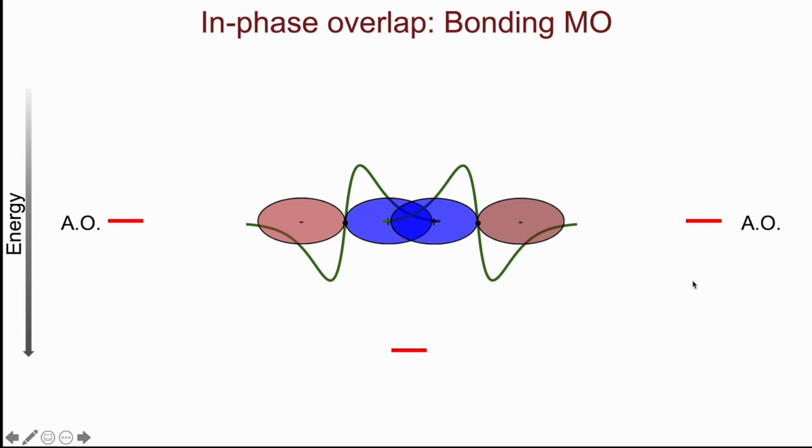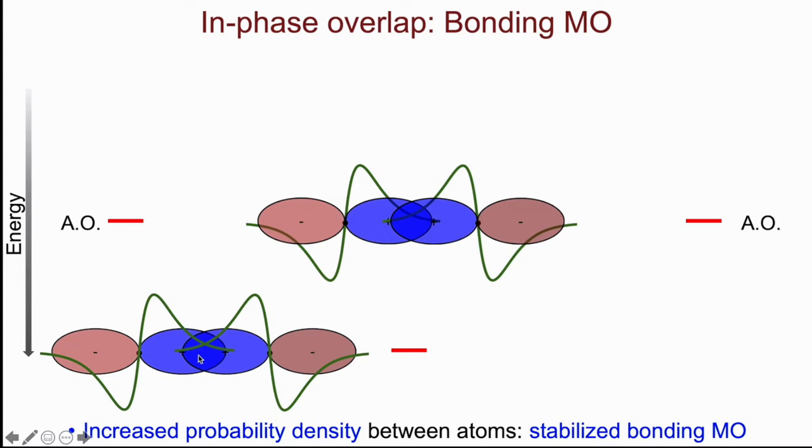And so here there is an increased probability density between the atoms, and that is the origin of the stabilized bonding molecular orbital, as we call it.